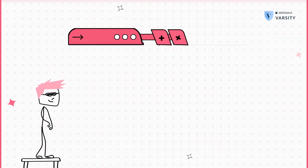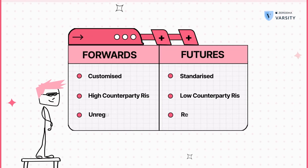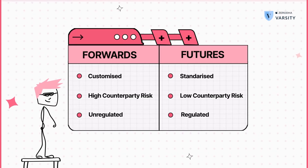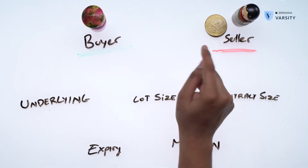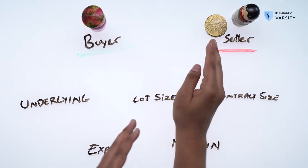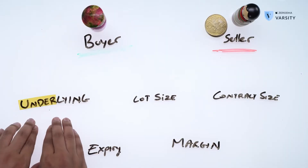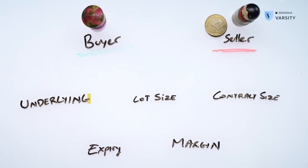Here are the differences between a futures contract and a forwards contract. The first component is the underlying. In the previous example, they were exchanging gold for money — so gold was the underlying. An underlying could be equity, gold, currency, or even an index like Nifty or the Sensex. The underlying is what you are trading.